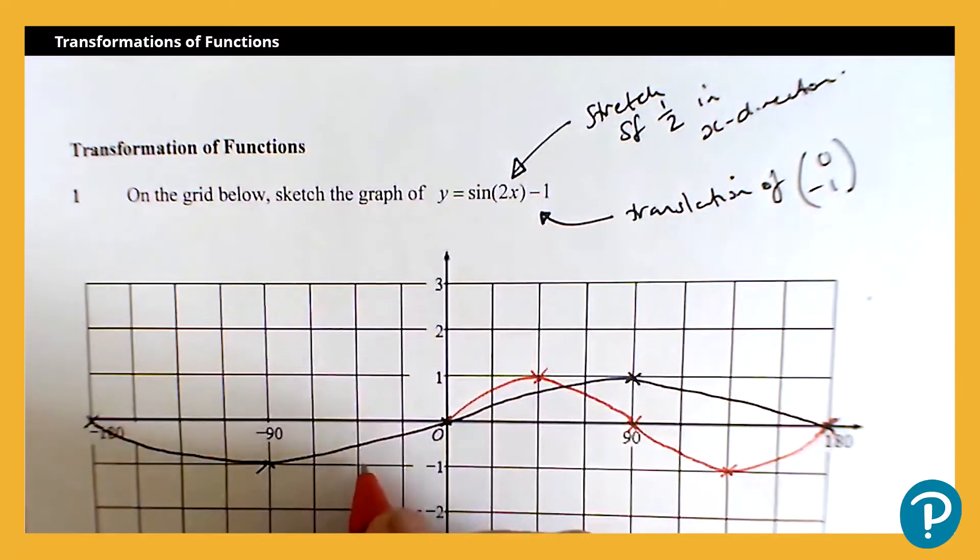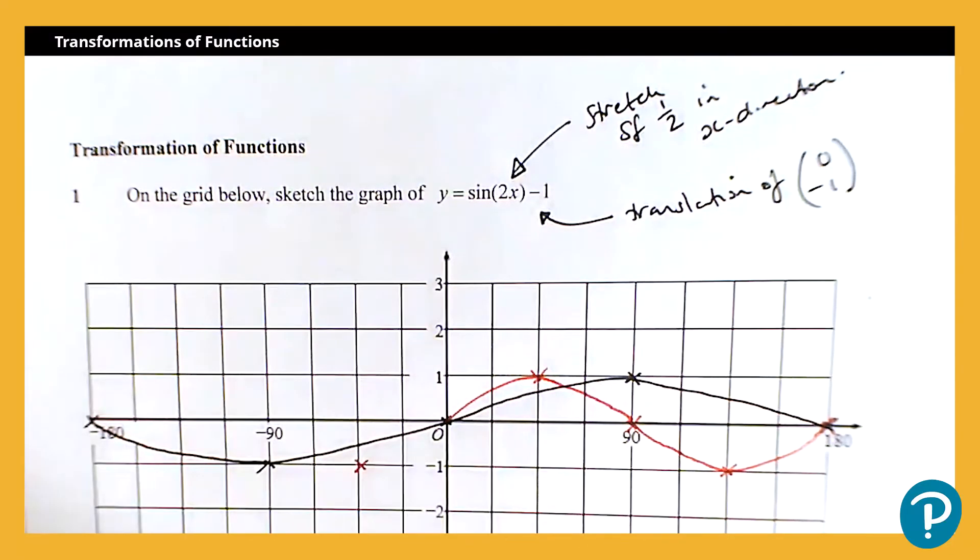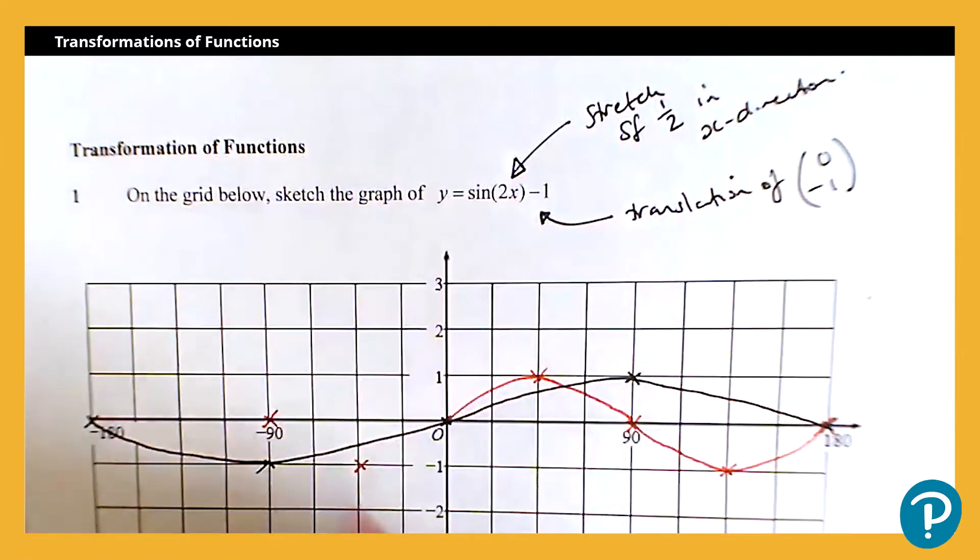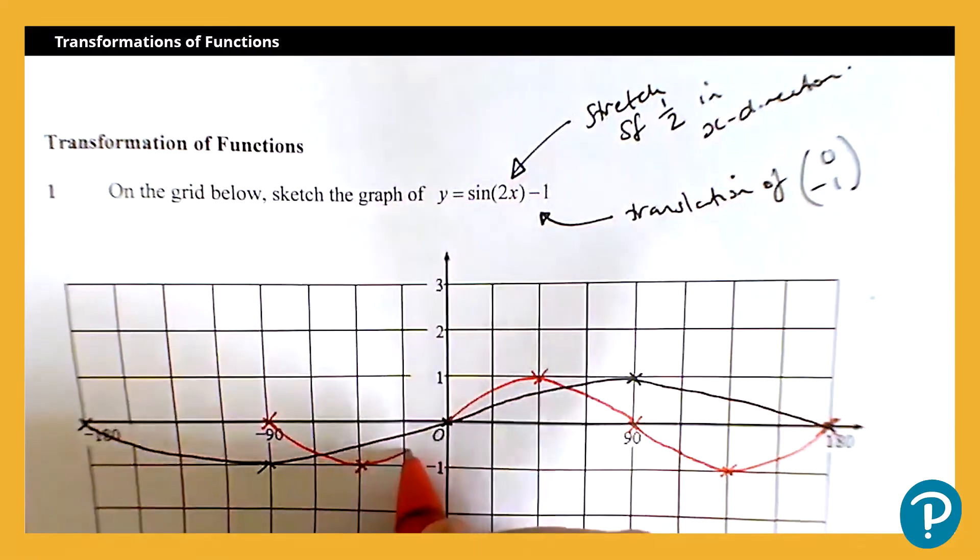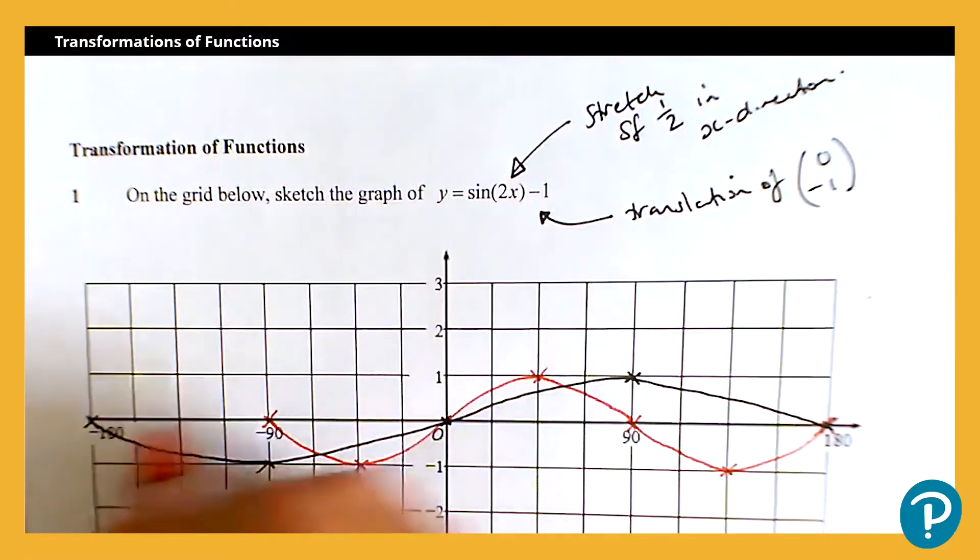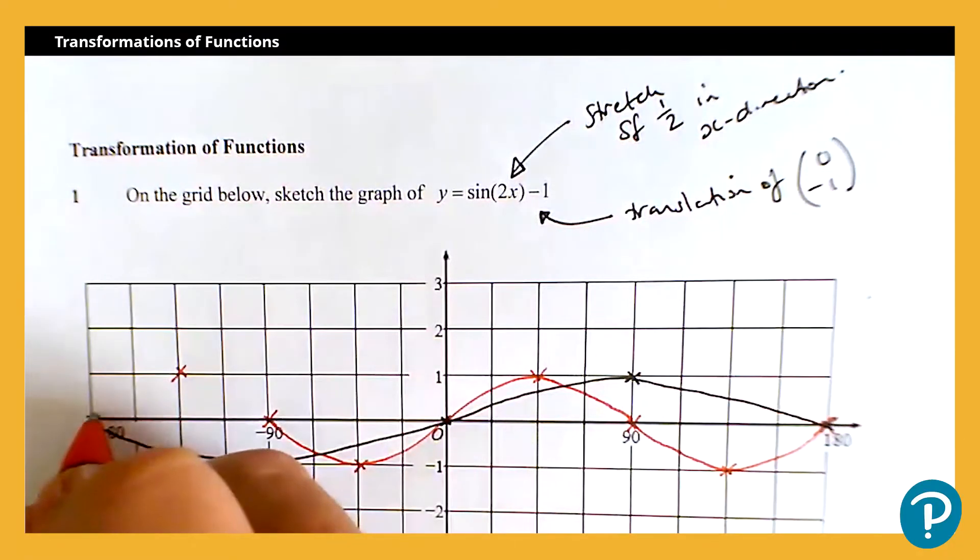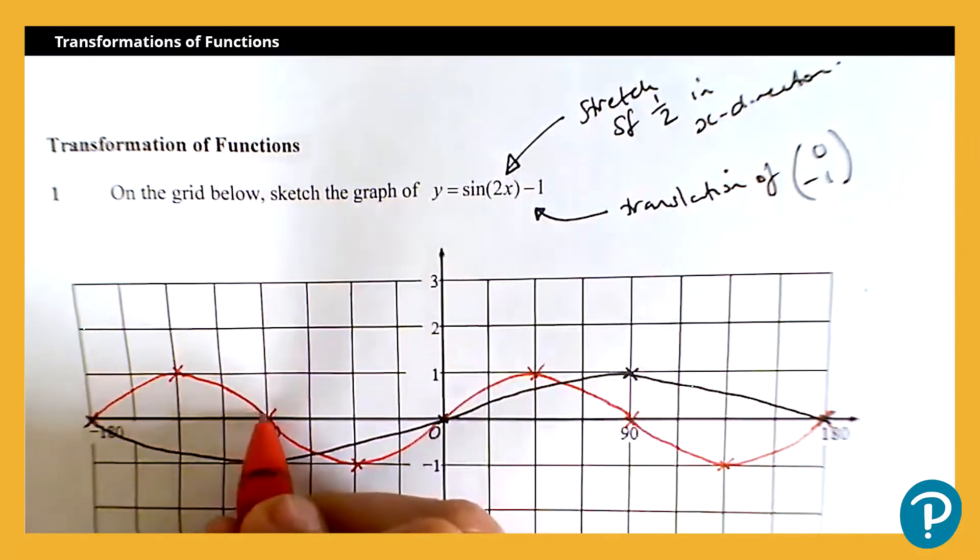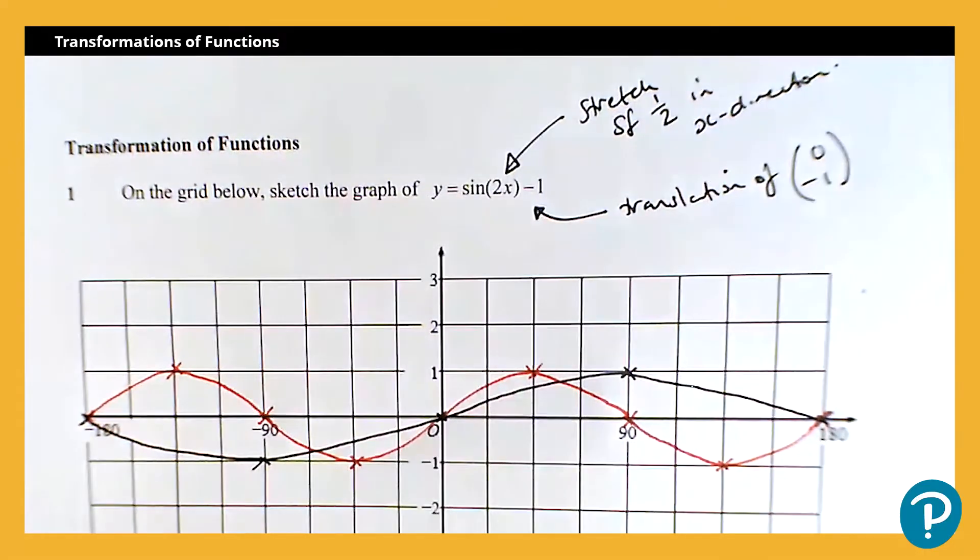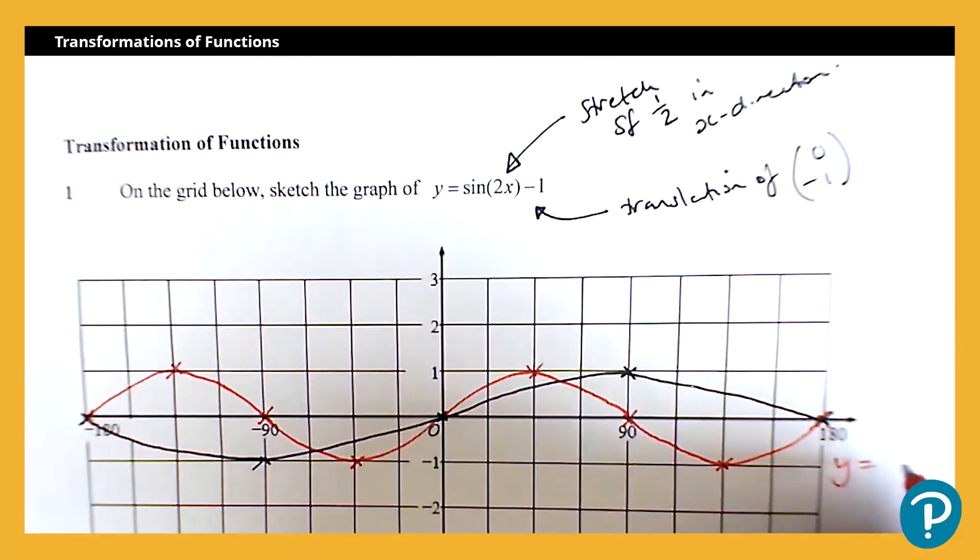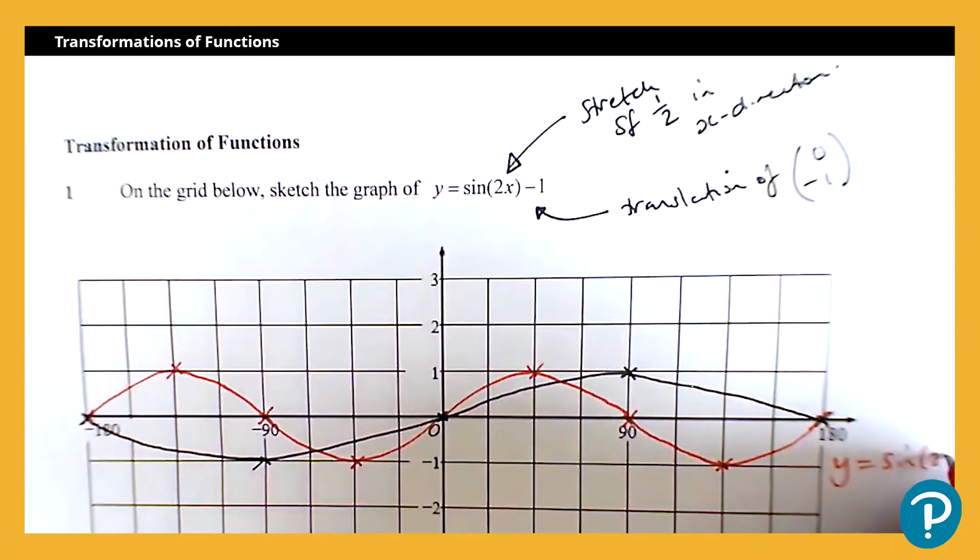And we'll get exactly the same thing on the other side of the axis. So negative 90, negative 1 will move to negative 45, negative 1. Negative 180, 0 will move to negative 90, 0. And then we will get, just like we did on the other side, there we go. So in red there, we have the graph of y equals sine 2x.